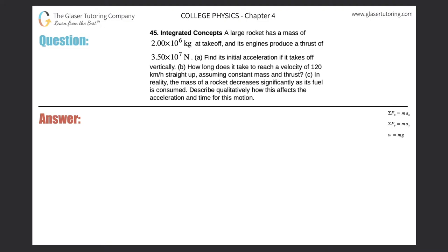Number 45, integrated concepts. A large rocket has a mass of 2 times 10 to the 6 kilograms at takeoff, and its engines produce a thrust of 3.5 times 10 to the 7 newtons. Letter a: find its initial acceleration if it takes off vertically.